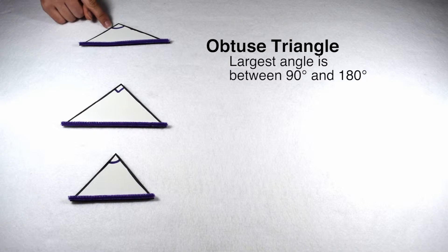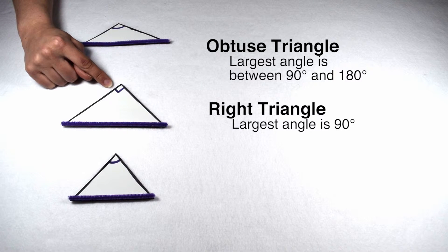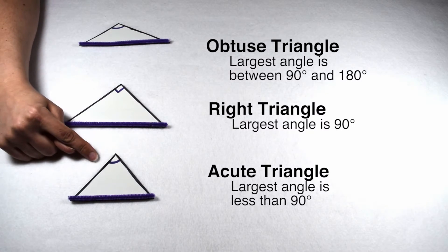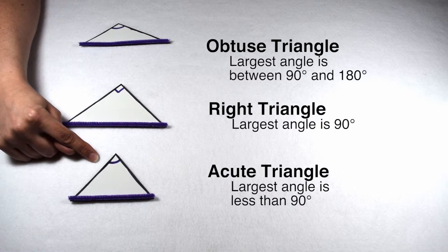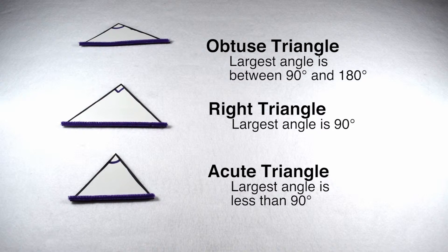If our largest angle is an obtuse angle, meaning it measures between 90 and 180 degrees, then we would classify this as an obtuse triangle. If our largest angle is a right angle, meaning it measures exactly 90 degrees, then we would classify this as a right triangle. If our largest angle was an acute angle, meaning it measures less than 90 degrees, then we could classify that as an acute triangle.